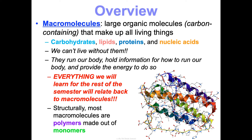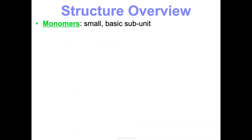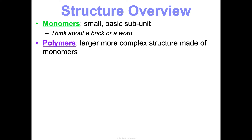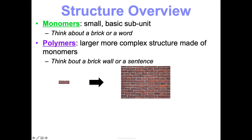Most macromolecules are polymers made out of monomers. Monomers are small, basic subunits — think about a brick or a word. Polymers are larger, more complex structures made of monomers — think about a brick wall or a sentence. A monomer is like a brick, and those build into a brick wall, which would be the polymer. With the word analogy, words build into sentences. Monomers build into polymers.